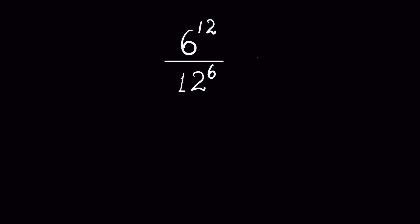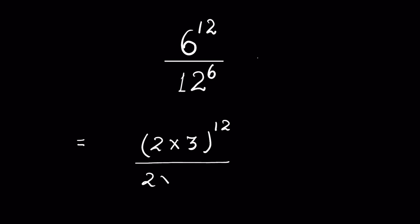6 to the power 12 upon 12 to the power 6 — how do you solve it without using a calculator? Let's try: 6 we can write as 2 times 3, whole to the power 12, upon 12 as 2 times 2 times 3, whole to the power 6.